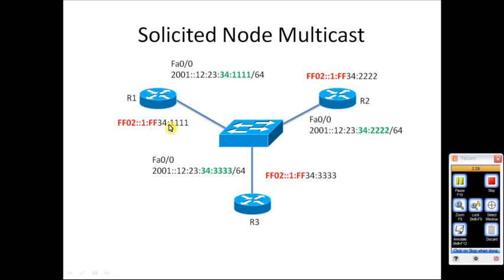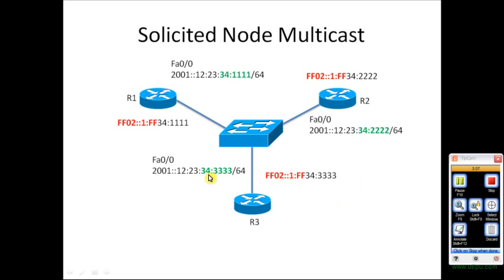The last 24 bits are simply taken from the rightmost 24 bits of the IPv6 address. For R2's FastEthernet 0/0 IPv6 address, you take the 24 bits on the right — 34:2222 — and append them to the prefix FF02::1:FF to generate the solicited-node multicast address of which R2 is a member. The same applies to R3, which joins its own multicast group based on its FastEthernet 0/0 IPv6 address.